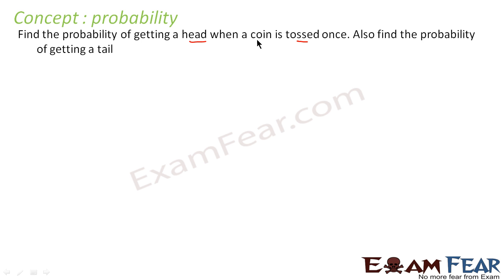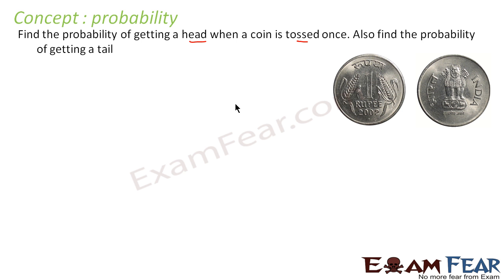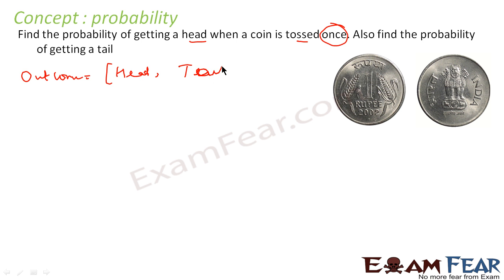Find the probability of getting a head when a coin is tossed once, and also find the probability of getting a tail. So I have a coin — this is my tail side and this is my head side. When the coin is tossed once, I will get either head or tail. Now I am asked to find the probability of head.